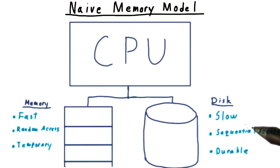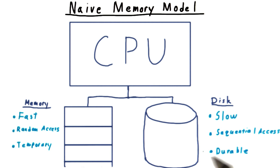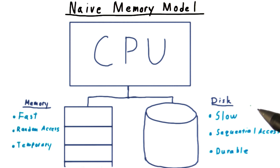The hard disk, by contrast, is slow. It uses sequential access, since you have to actually spin the disk to the right place. And what you write to the disk is permanent — it will still be there when the program exits or if power is lost.